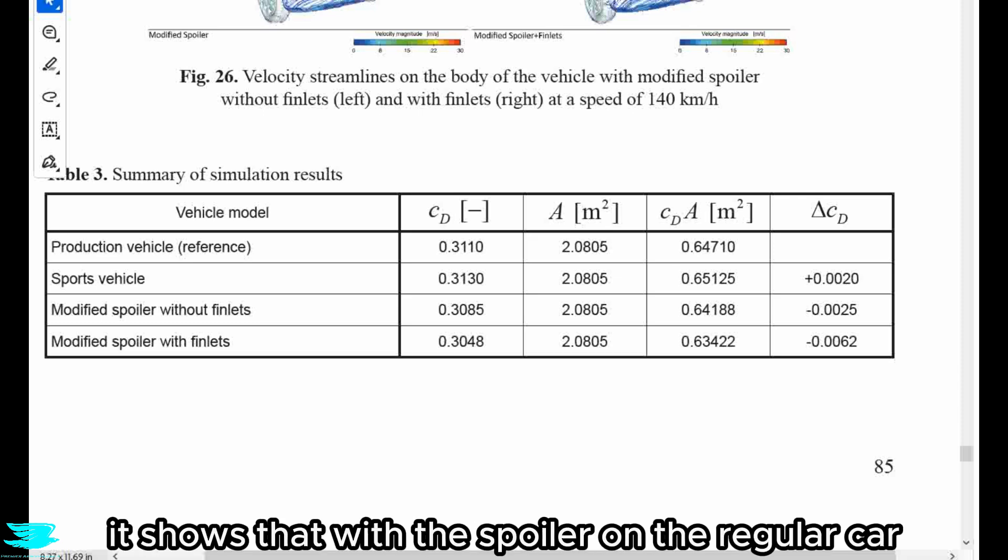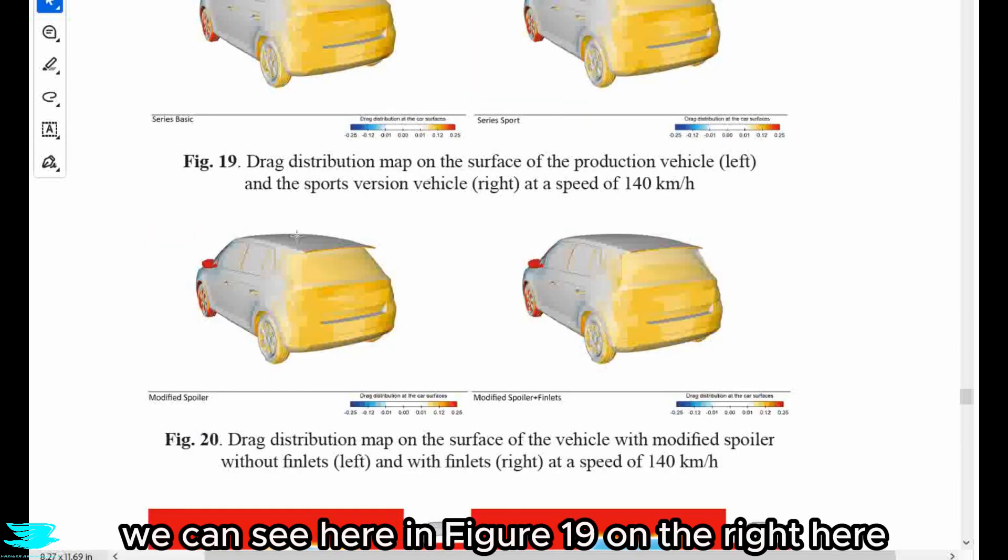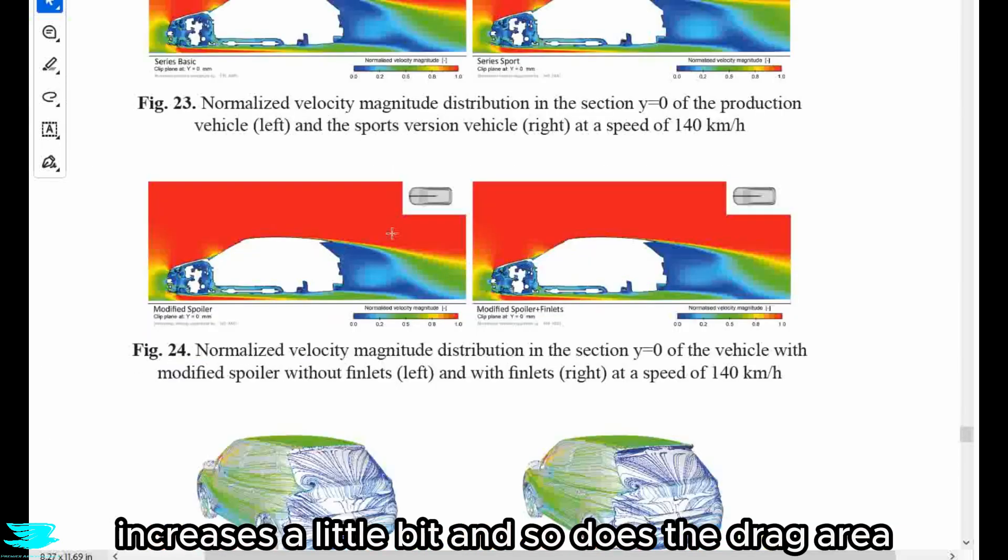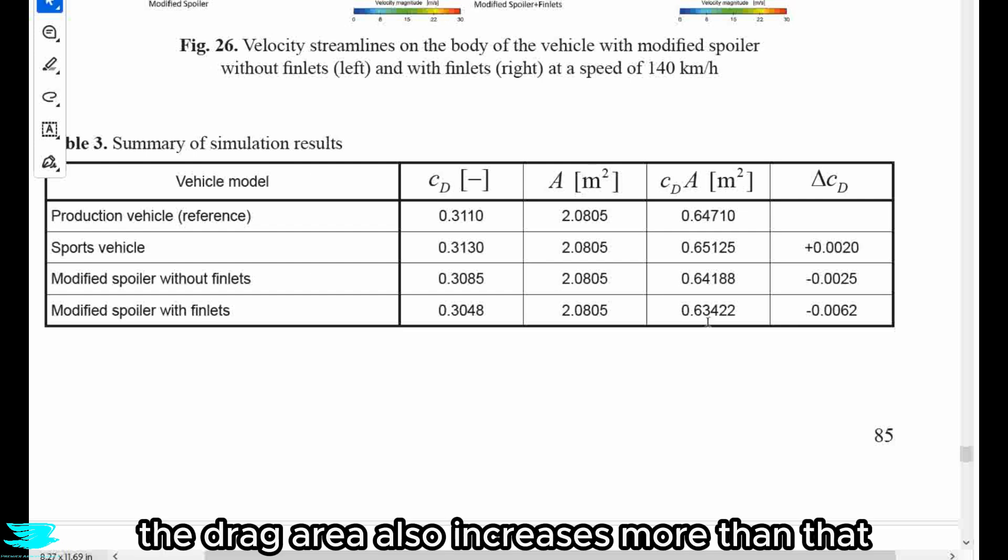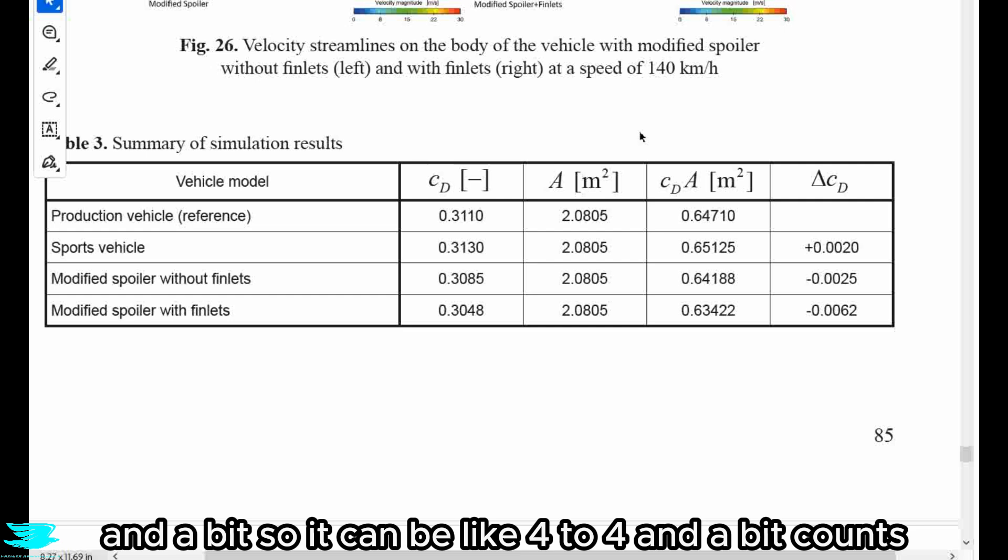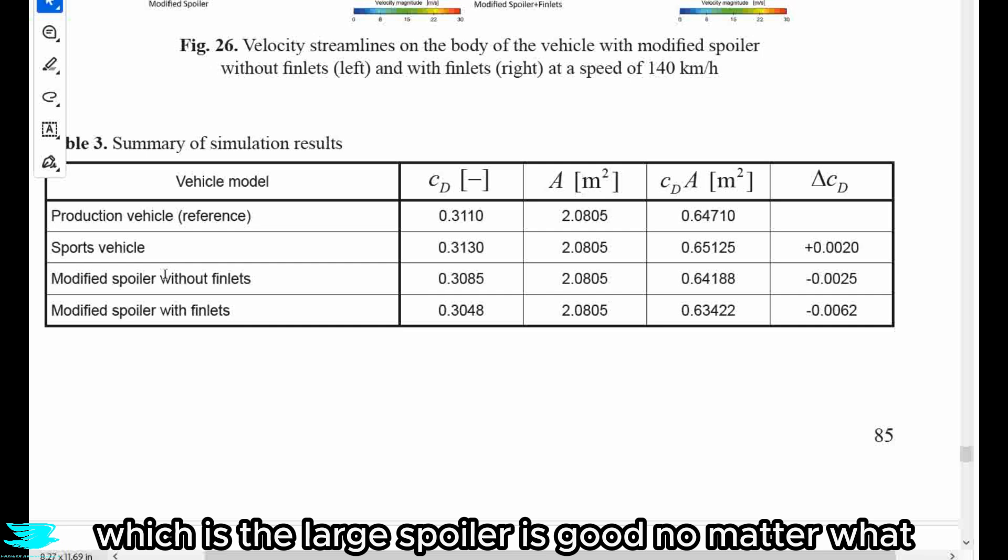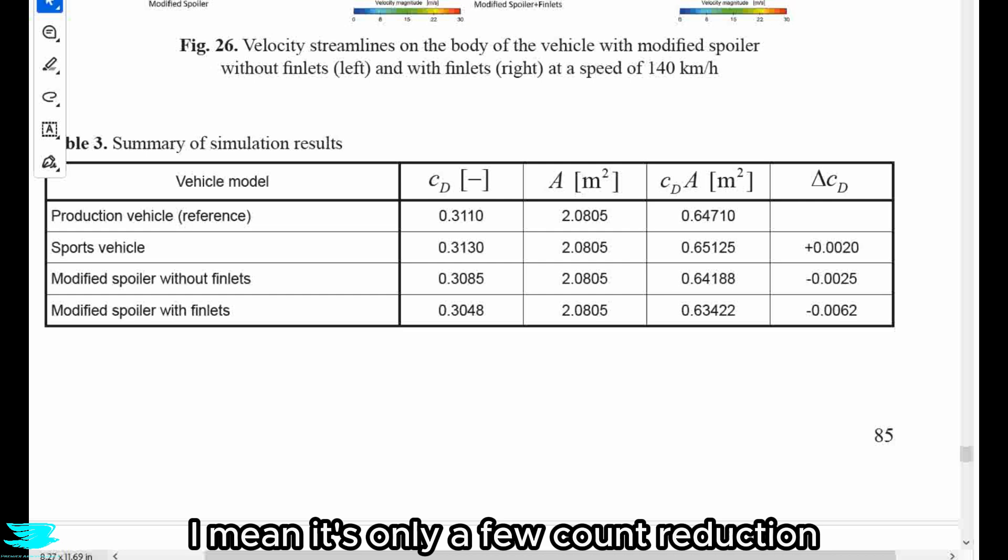So that's why they included it here. Anyway, with this table, it shows that with the spoiler on the regular car, so the sports vehicle we can see here in figure 19 on the right here, the drag coefficient actually increases a little bit. And so does the drag area and goes up by like two counts. So it's probably within the CFD error, but maybe not. The drag area also increases more than that because the area is two. So any drag change in the drag coefficient is going to be multiplied by two and a bit. Then the modified spoiler, which is the large spoiler, is good no matter what, especially when you have the fins. I mean, it's only a few count reduction, but it's still a decent reduction.